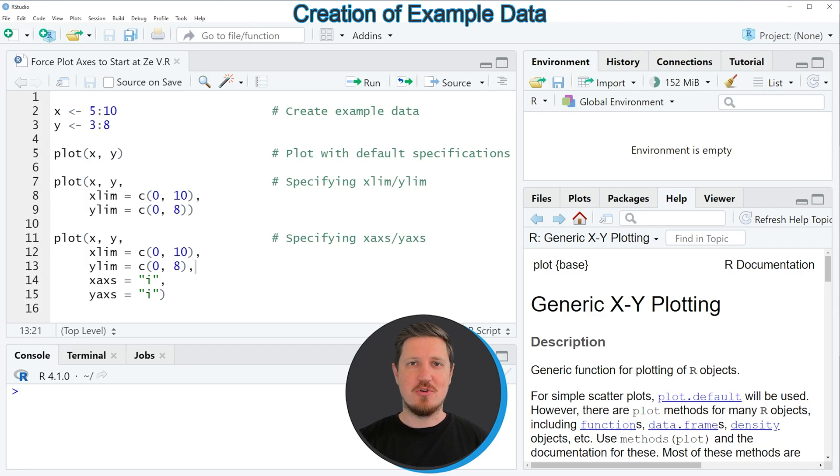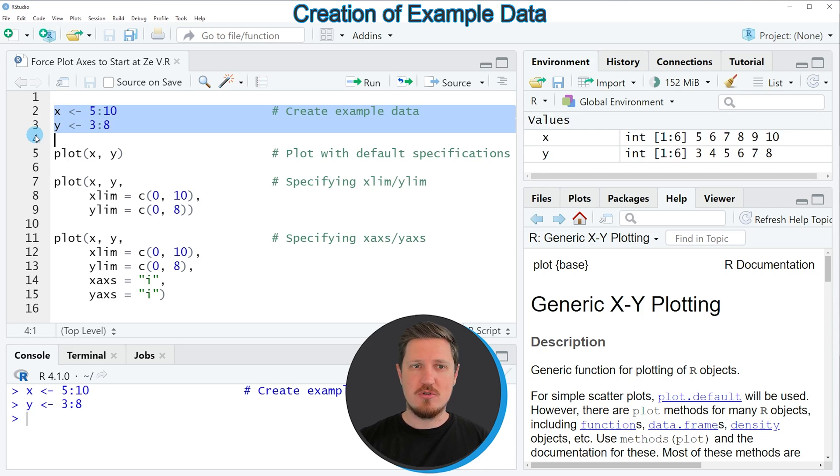In this video I will show you an example based on the data that we can create with lines 2 and 3 of the code. After running lines 2 and 3 you can see at the top right of RStudio two new vector objects which are called X and Y and both of these vector objects contain numeric values.